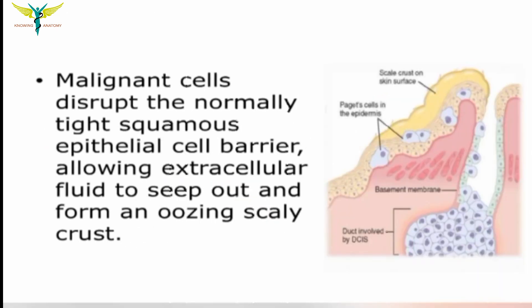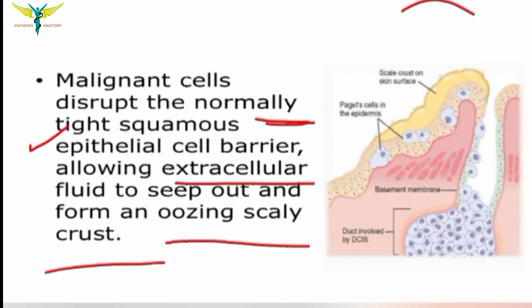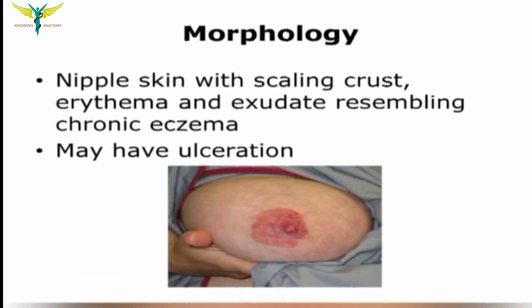The malignant cells disrupt the normally present tight squamous epithelial cell barrier, as seen in this diagram, which allows extracellular fluid to seep out, forming oozing and scaly crust. The scaly crust on the skin surface is formed by the extravasation of extracellular fluid because of the damage to the tight squamous epithelial cell barrier.